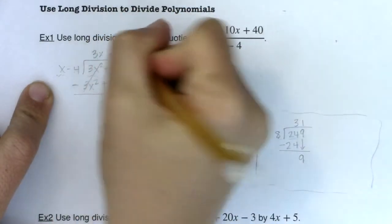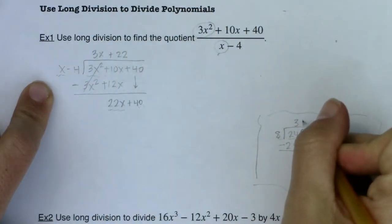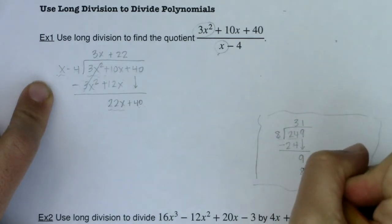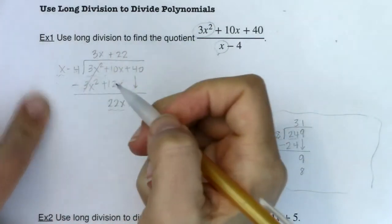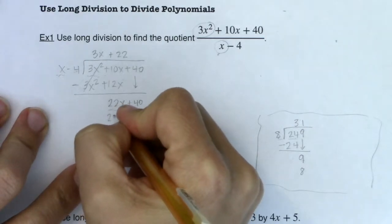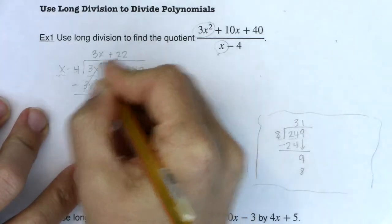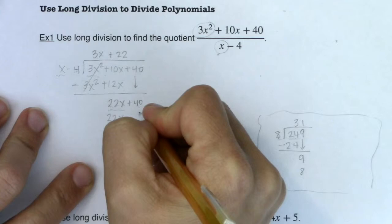Just like I had the 1 here. I'd go 1 times 8. I would write 8. Well, now I'm going to do 22 to the binomial x minus 4. So I'm going to get 22x. 22 times negative 4 is negative 88.